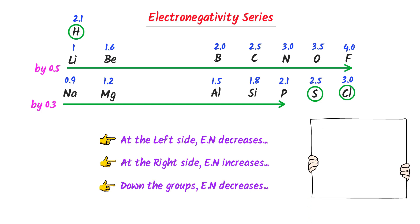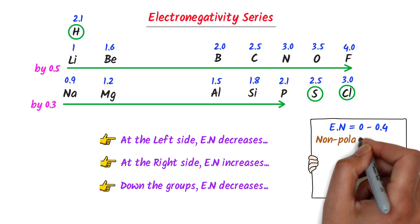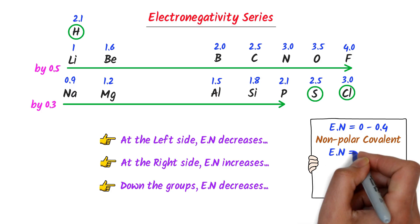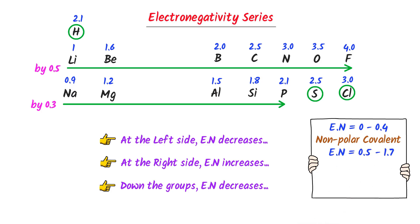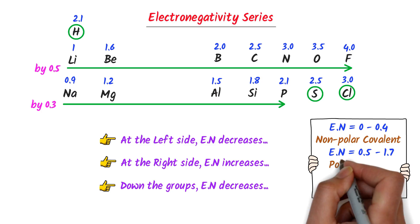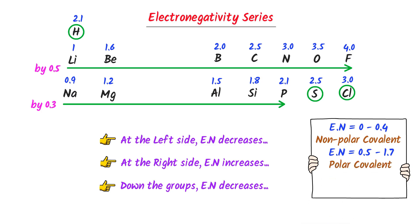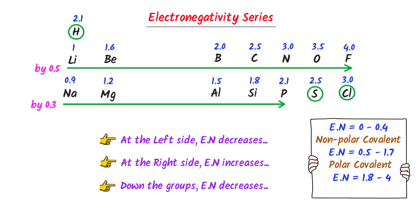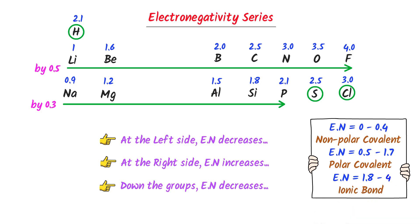Now listen carefully. If the electronegativity difference is between 0 and 0.4, the bond is a non-polar covalent bond. If it is between 0.5 and 1.7, the bond is a polar covalent bond. If it is between 0.8 and 4, the bond is an ionic bond.